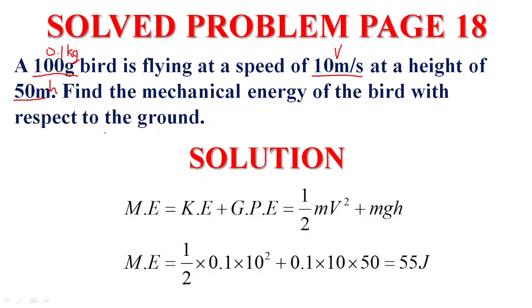Find the mechanical energy of the bird with respect to the ground. First, you have to write the rule. Mechanical energy equals KE, kinetic energy, plus GPE, gravitational potential energy. Kinetic energy equals half mv squared, GPE equals mass times gravity times height.